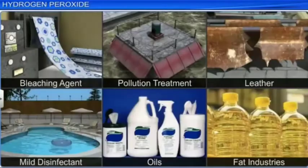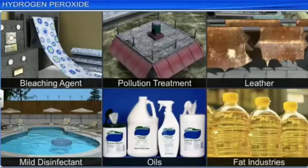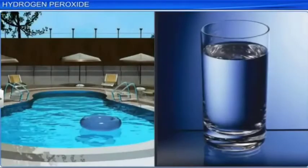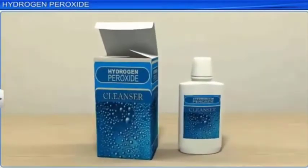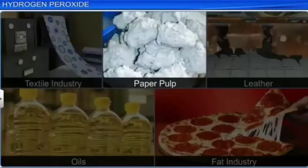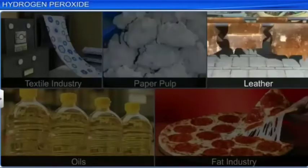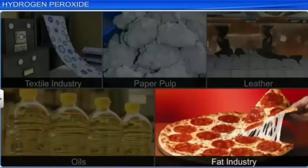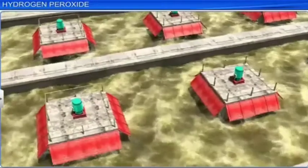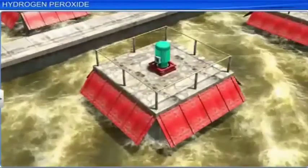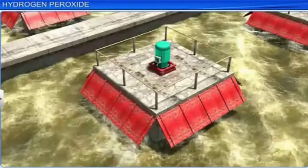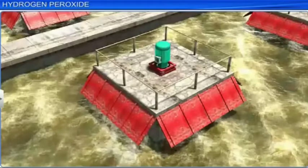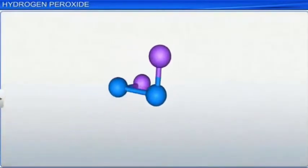We come across many uses of hydrogen peroxide every day. For example, as a mild disinfectant, as a cleanser, as a bleaching agent in the textile, paper pulp, leather, oils, and fats industries, as a pollution control agent in the treatment of domestic and industrial effluents, oxidation of cyanides, restoration of aerobic conditions to sewage wastes, and so on. Thus, we see that hydrogen peroxide is an important compound.